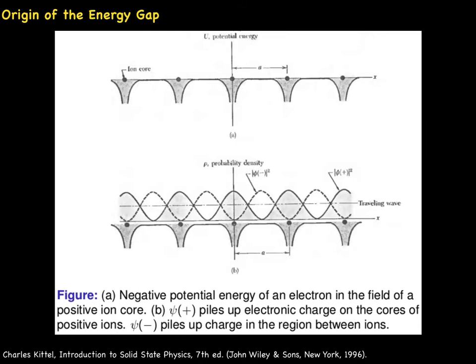We expect the ion cores to be positive because the atoms are ionized with the valence electrons taken off to form the conduction band. The potential energy of the electron in the field of the positive ion cores is negative, so that the force between electron and ion core is attractive.